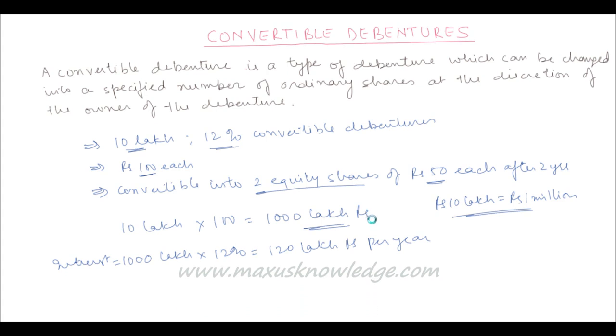So as you have noticed, the most attractive feature of the convertible debentures is that it provides a fixed income at the beginning as well as a chance to have capital gains associated with the equity shares afterwards.